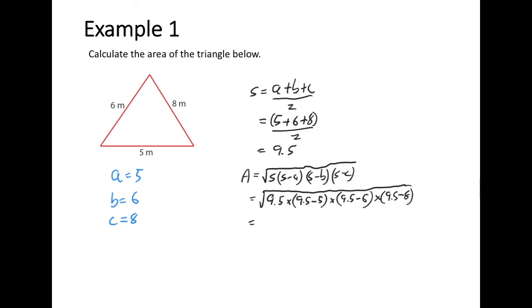You can do that all in one go on your calculator, or work out the subtractions first. That gives you the square root of 9.5 multiplied by 4.5, multiplied by 3.5, multiplied by 1.5, which works out to be 14.98 metres squared. So using Heron's rule, the area of a triangle with sides of 5, 6, and 8 is 14.98 metres squared.